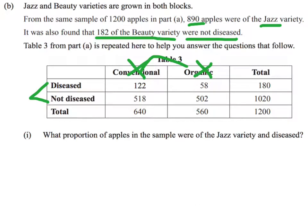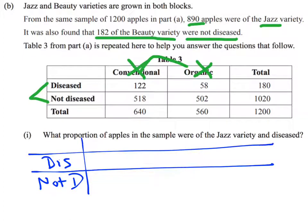I'm going to need to make my own table. I still need diseased and not diseased because that's been talked about in the question. So I still need disease and not diseased, and I'm going to need a total because we always need a total.